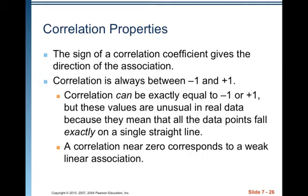Correlation properties. The sign of a correlation coefficient gives the direction of the association. If the correlation coefficient is positive, that means you have a positive association. If the correlation coefficient is negative, that means you have a negative association. Positive association means that as x increases, y increases. Negative association means that as x increases, y decreases.